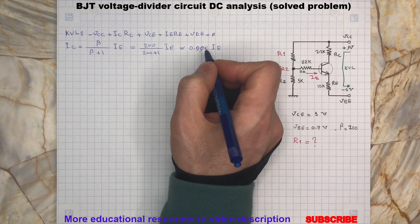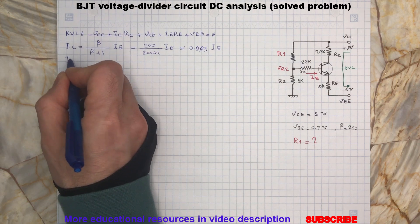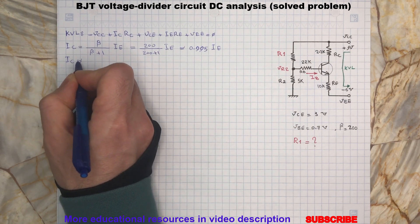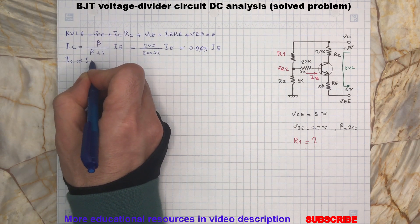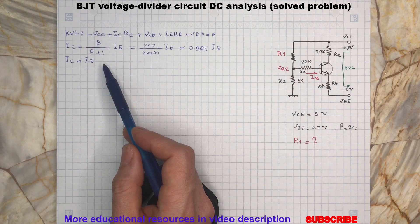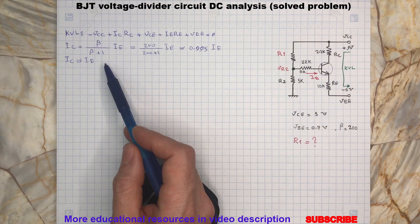So with a good approximation we rewrite the KVL by replacing the IC with IE and put the known parameters in the KVL.